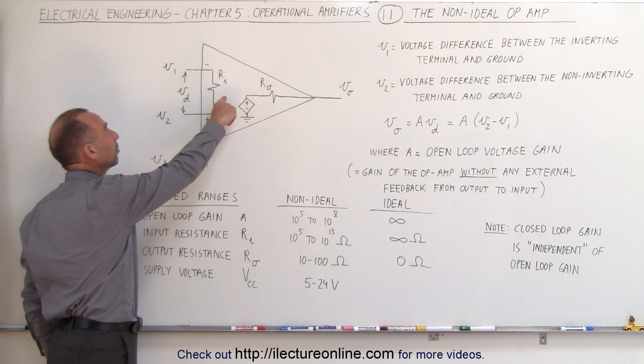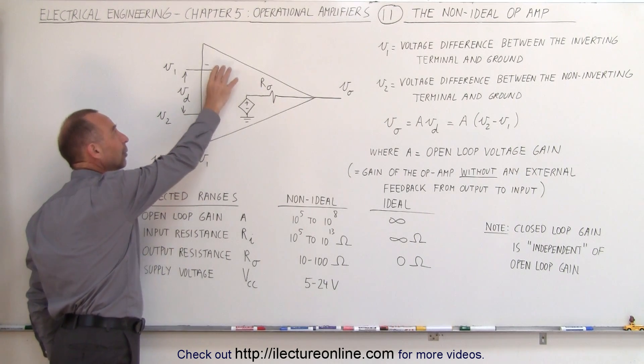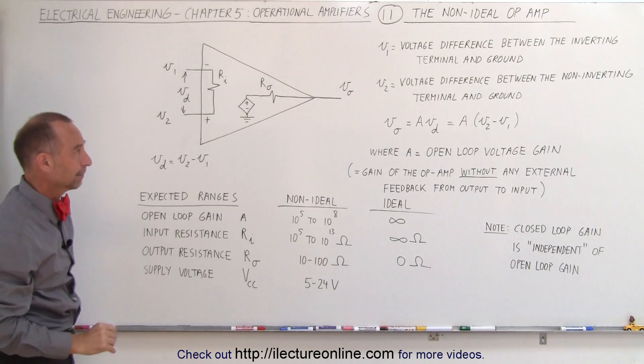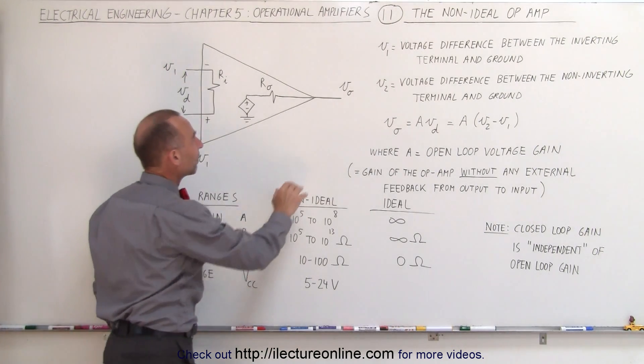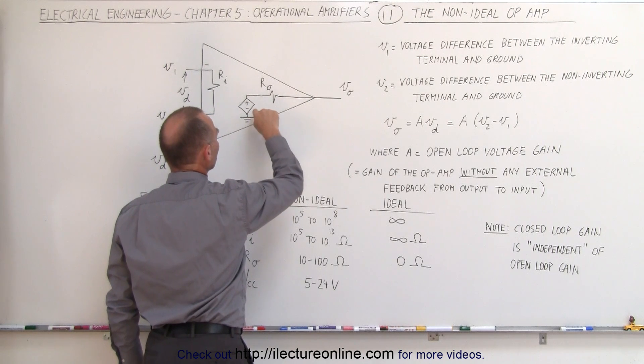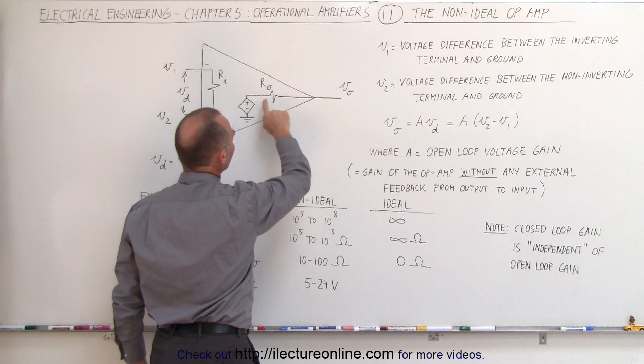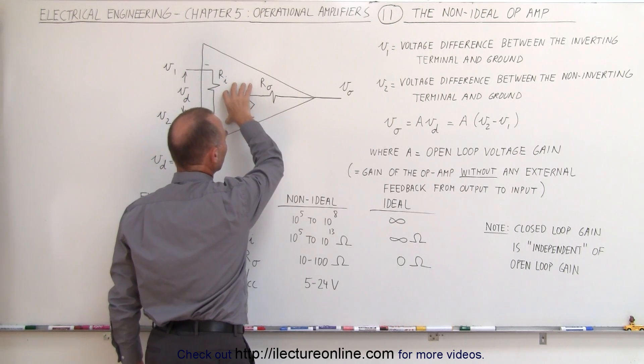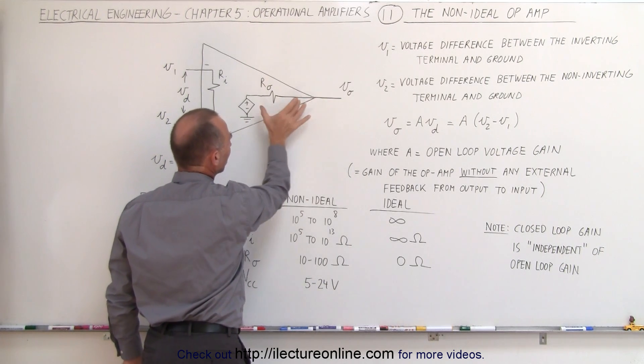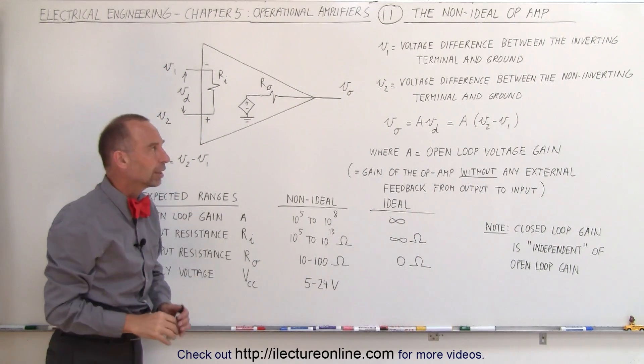Also notice there is a resistance between the inverting input and the non-inverting input, and that resistance is typically quite high. Also notice we have a voltage output here and we have an internal connection to ground which is related to the current flow that's going from the internal operational amplifier to the voltage output, and there's resistance across there which is relatively small in nature.